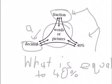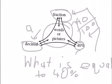For percentage to fraction, percent means out of 100, so the denominator is going to be 100. The numerator is going to be the percentage that we have right here, 40. So the fraction is going to be 40 out of 100.